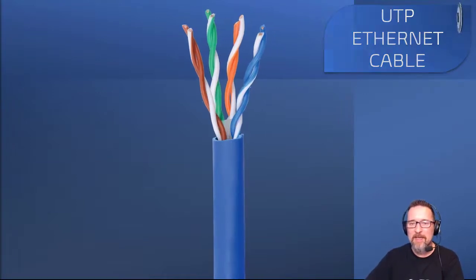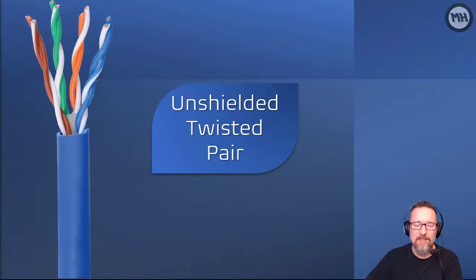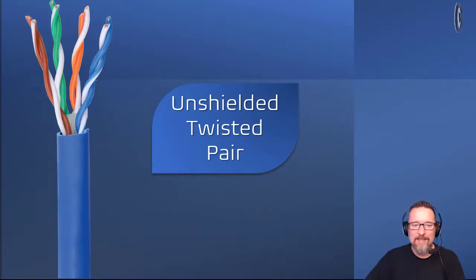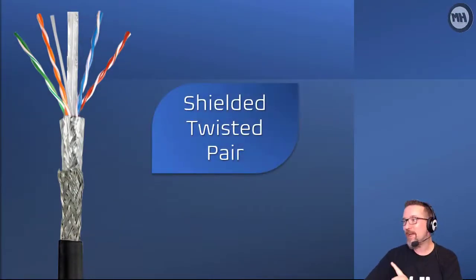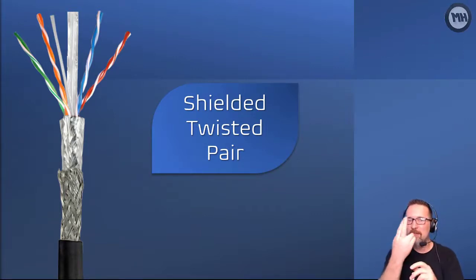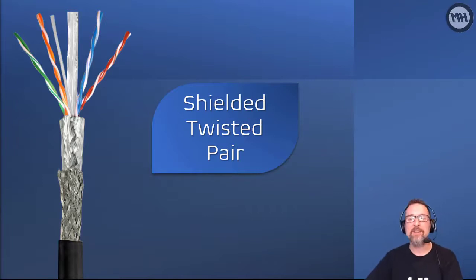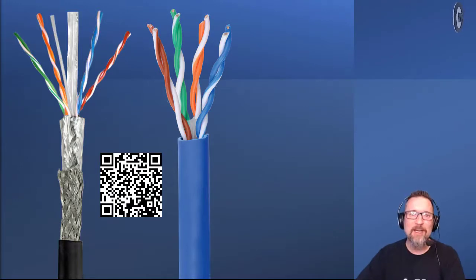Did you see the difference between them? UTP stands for Unshielded Twisted Pair — unshielded means it hasn't got a shield around it, and the pairs have been twisted together. Then we have the Shielded Twisted Pair. You can see the pairs of wire twisted around each other, with a special shield to protect them from electromagnetic interference. It's very important to know the difference — both are used for Ethernet cabling in a business or local area network.